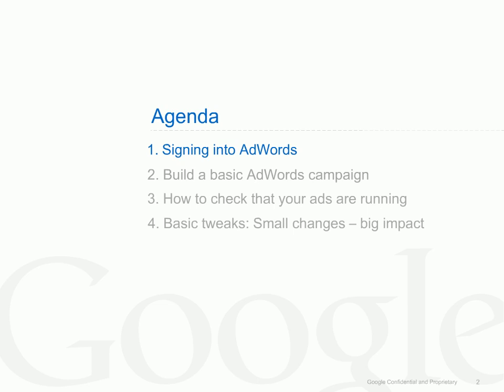Let's have a look at the agenda for this class. First, we will quickly show you how you can sign in to AdWords and what to do if you forgot your sign-in details. Next, we'll show you how to build a basic AdWords campaign. Even if you have already created one, it will be useful to review what makes a successful AdWords campaign. After that, we'll take a look at how you can check that your AdWords ads are running properly. And finally, we'll go over some basic tweaks that will help you improve your AdWords performance.